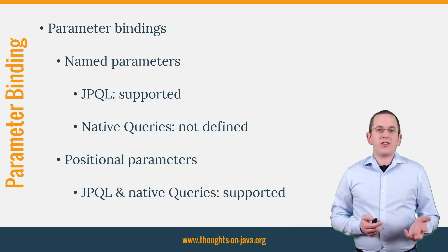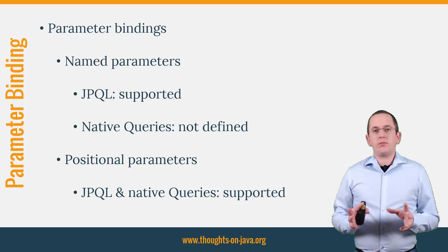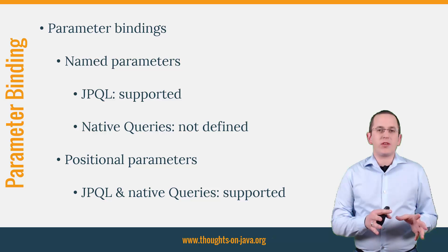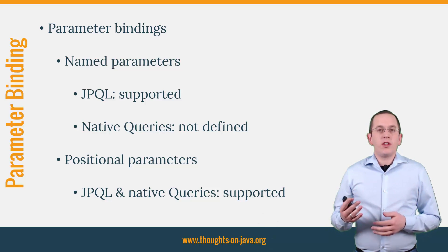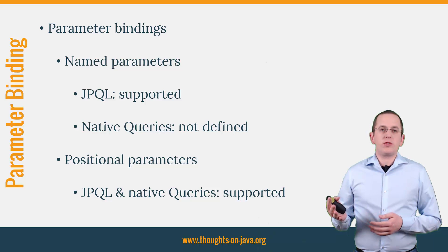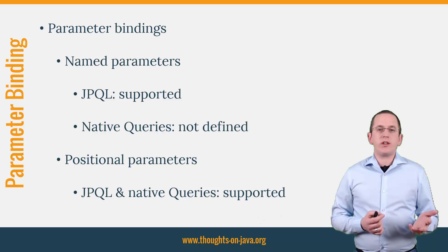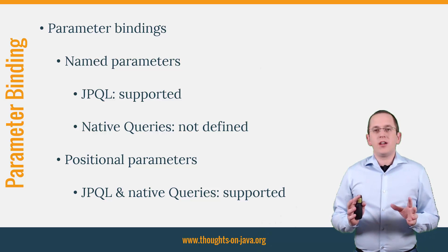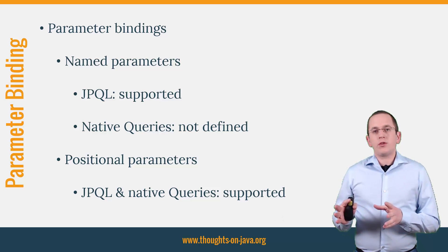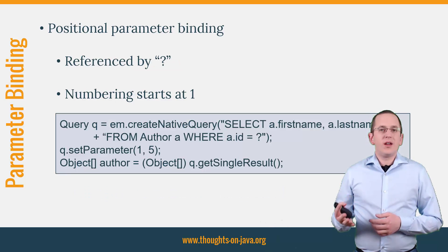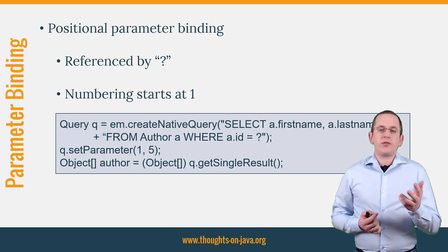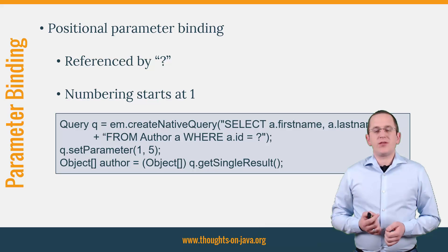JPQL and native SQL queries use the same query interface, so you could expect that you can set bind parameters for native queries in the same way as for JPQL queries — and that's almost the case. The query interface provides a setParameter method which you can use to set values for positional and named parameter bindings. You can use both with JPQL, but the use of named parameter bindings for native queries is not defined by the JPA specification. If you don't want to rely on proprietary features, you have to use positional parameters. Positional parameters are referenced by a question mark in your native query and their numbering starts at 1.